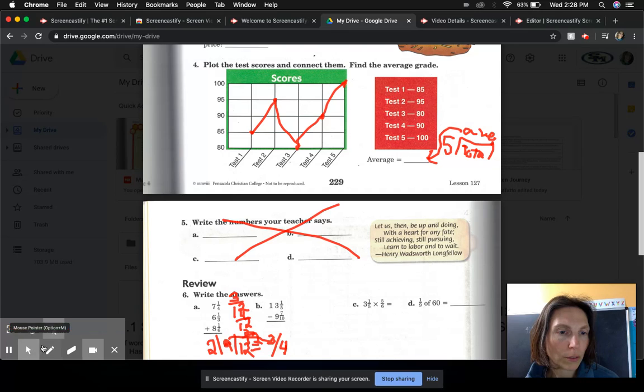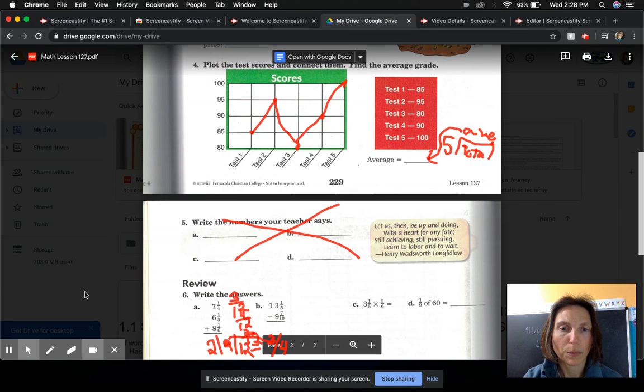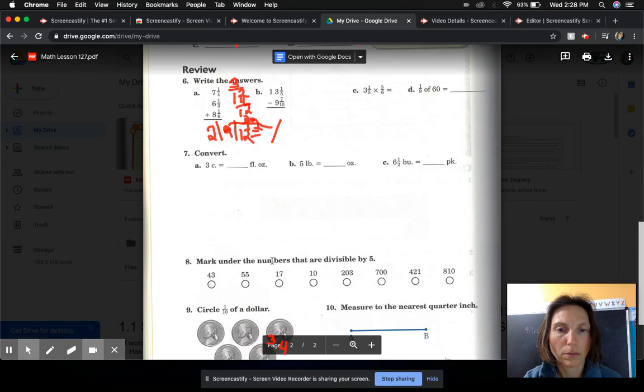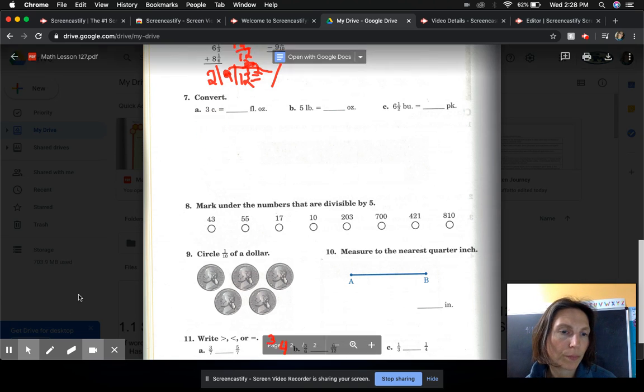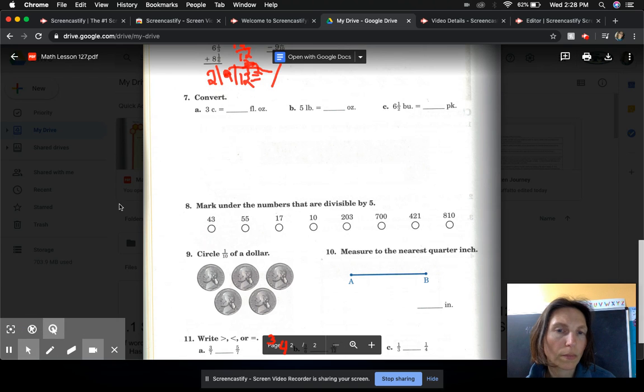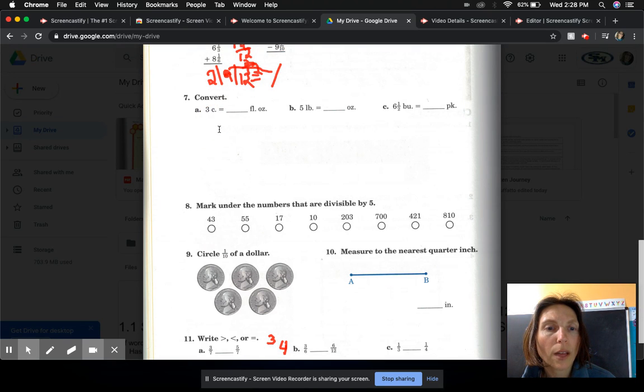Let's switch to mouse and I'll move my paper down. So now you have some conversions, cups to ounces. Cross to fly, multiply.